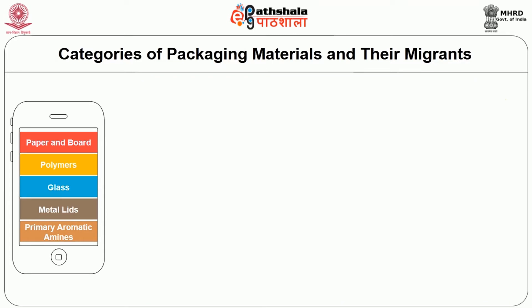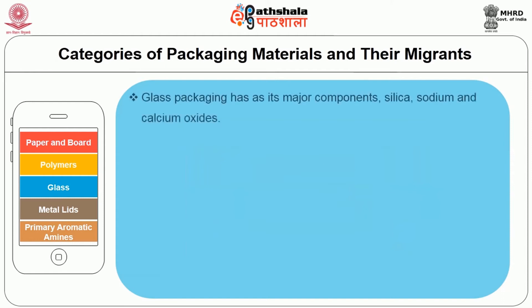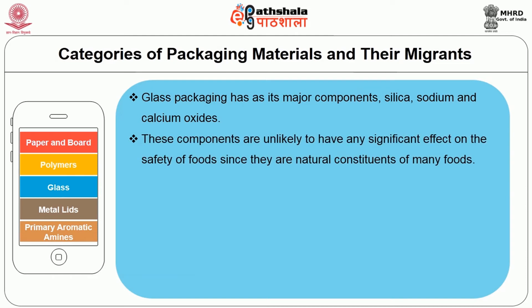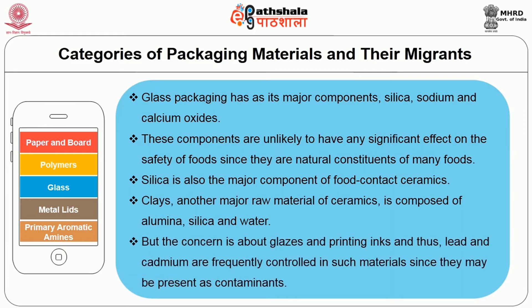The next type of packaging material is glass. Glass packaging has as its major components silica, sodium and calcium oxides. These components are unlikely to have any significant effect on the safety of foods since they are natural constituents of many foods. Silica is also the major component of food contact ceramics. Clays, another major raw material of ceramics, are composed of alumina, silica and water. However, the concern is about glazes and printing inks.